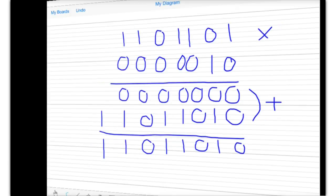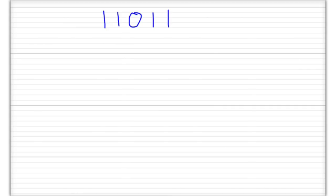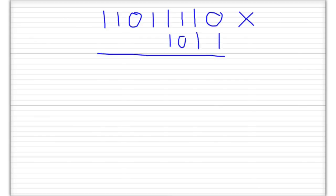Okay, one more problem — this one will be a little bit bigger. This time we have 1, 1, 0, 1, 1, 1, 0 times 1, 0, 1, 1, 1, 0, 1, 1. Starting on the right-hand side: 1 times 0 is 0, 1 times 1 is 1, 1 times 1 is 1, 1 times 1 is 1, 1 times 0 is 0, 1 times 1 is 1, and 1 times 1 is 1.